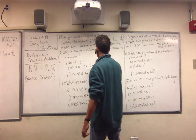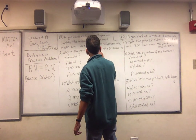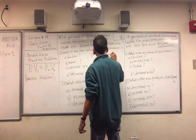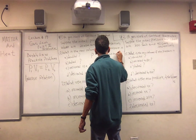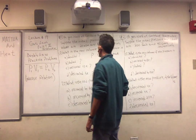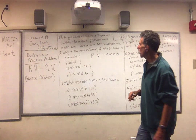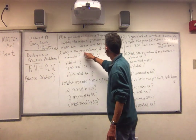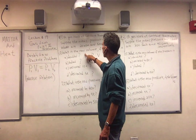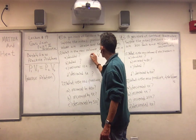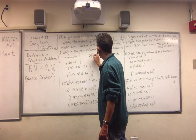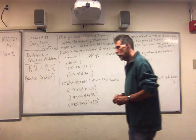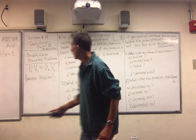PV is a constant — P times V is a constant. So let's look at the first case. The pressure is doubled. If I make this 2P, it has to be one-half the volume. Everybody understand? Inverse relationship.